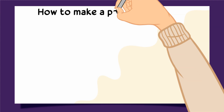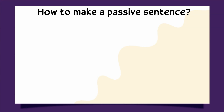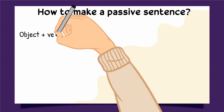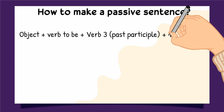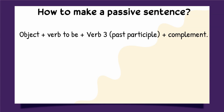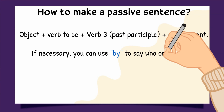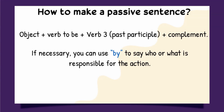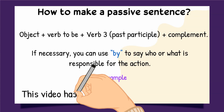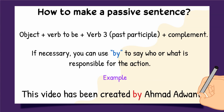How to make a passive sentence: Object plus verb to be plus Verb 3 (past participle) plus complement. If necessary, you can use 'by' to say who or what is responsible for the action. Example: 'This video has been created by Amadadwani.'